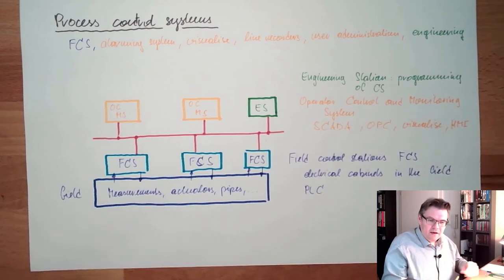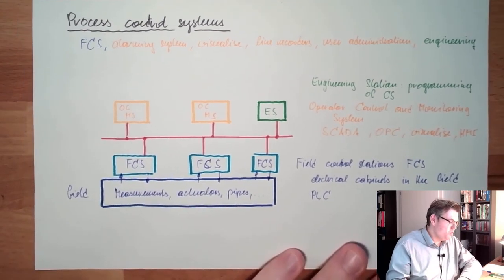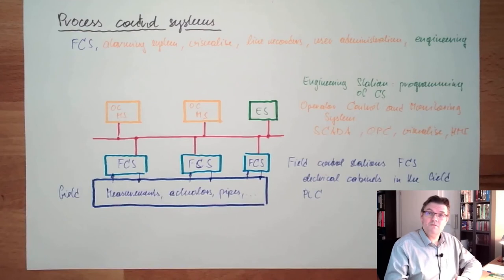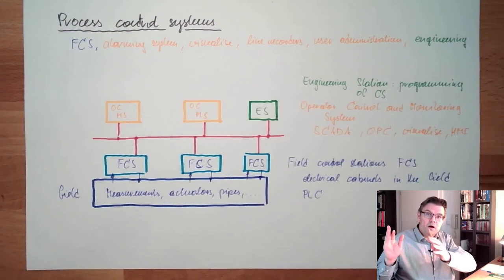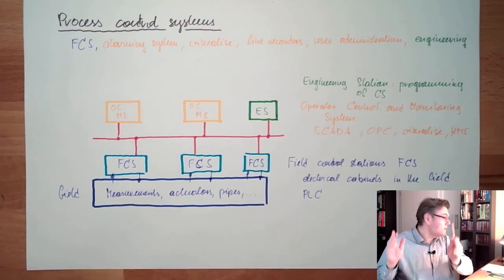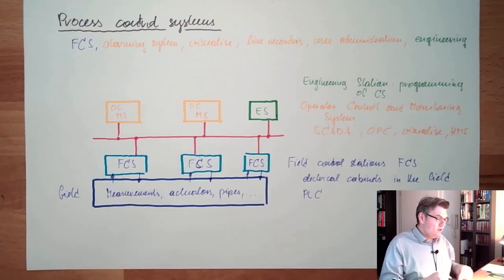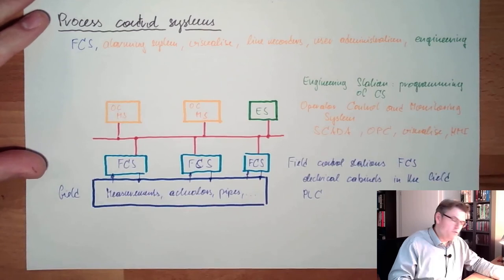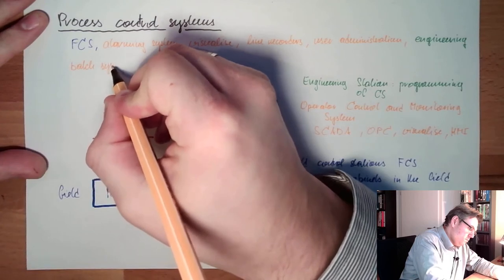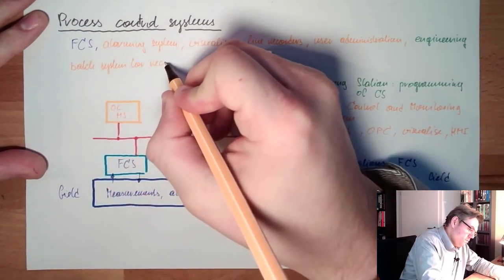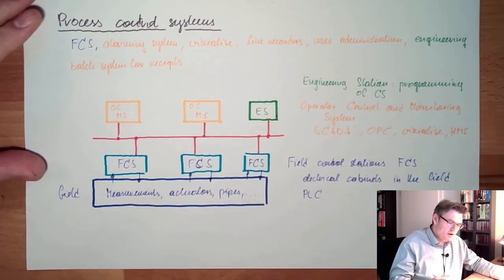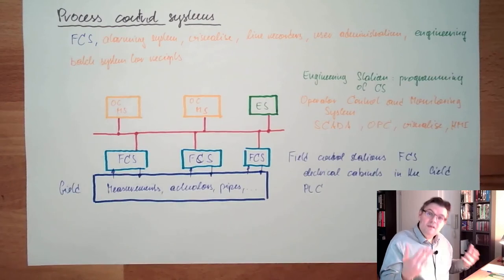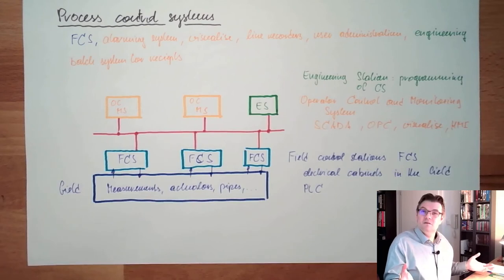Then there might also be something like a batch system if you have a process which can produce different things. If you have a process for different types of bread or something, you have different receipts. You can mix with the same equipment but need another amount of flour, salt, sugar, and spices. There might be a batch system for receipts. This is not always there. For process control system companies you can buy it, but you don't need it all the time. If you have a process which is always the same, you don't need receipts.